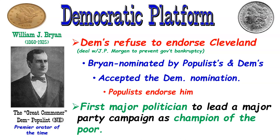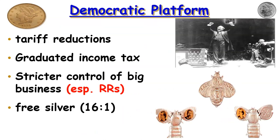The populists were pushing for Bryan to run as a populist candidate, but the Democrats also wanted him as their nominee. As a rational person, Bryan chose to run as a Democrat — with the most resources and longest history — but he ran on populist ideas. The populists endorsed him. This would be the first major politician to lead a major party campaign as a champion of the poor person — the first campaign where that messaging was front and center.